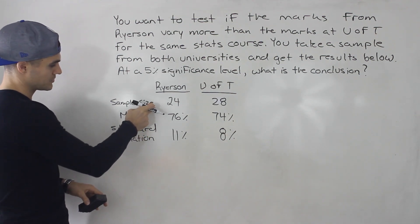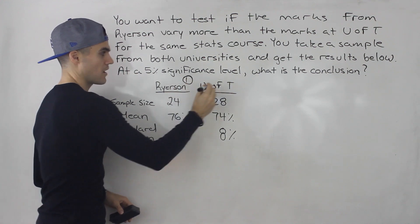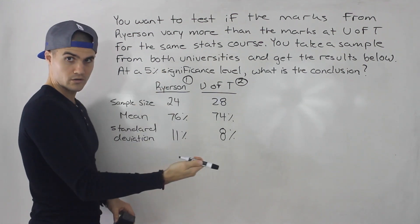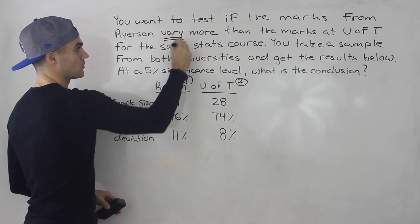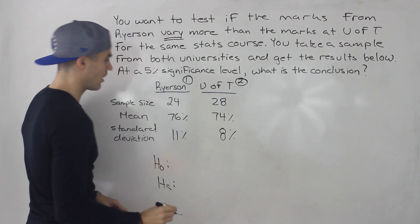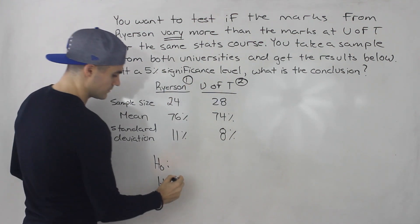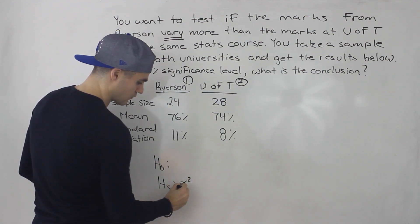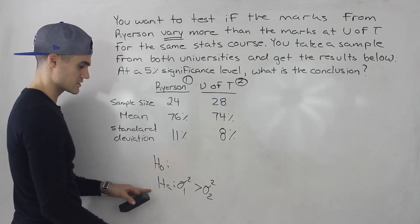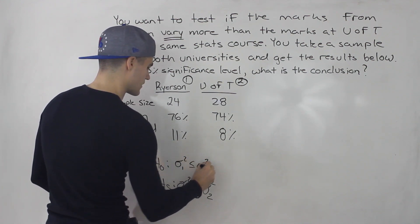We have the sample size, sample mean, and sample standard deviation for both Ryerson and U of T. Let's say Ryerson is population one and U of T is population two. We want to test if the marks from Ryerson vary more than the marks at U of T. When we're talking about varying, we're talking about variance or standard deviation. Setting up the null and alternative hypothesis: we're testing if the variance for population one is greater than the variance for population two — that's the alternative hypothesis. The null hypothesis is just the opposite of that.